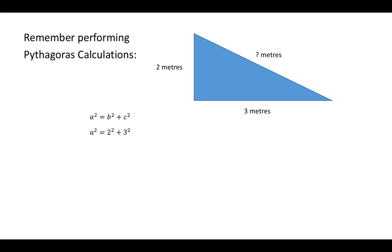You substitute in the values. Evaluate your squares. Add together your numbers. And in the last stage, it involves you having to work out the square root of the number 13 in this case.